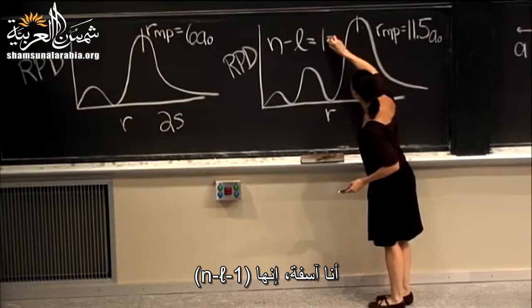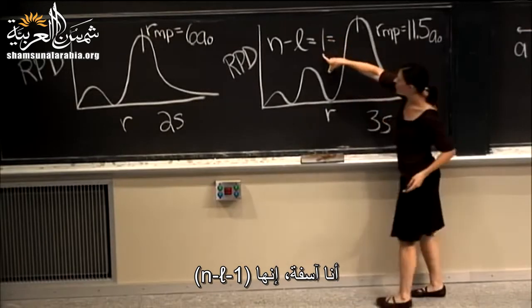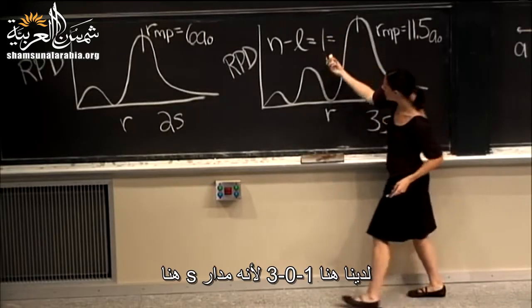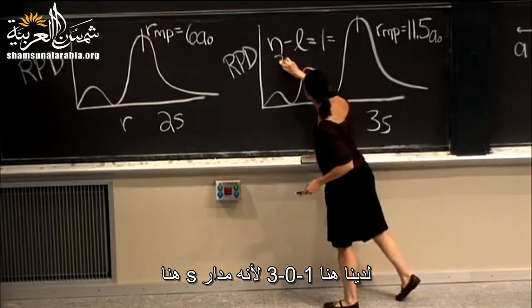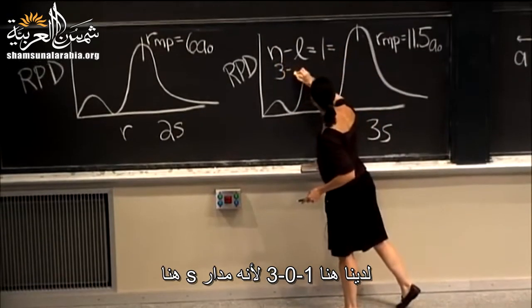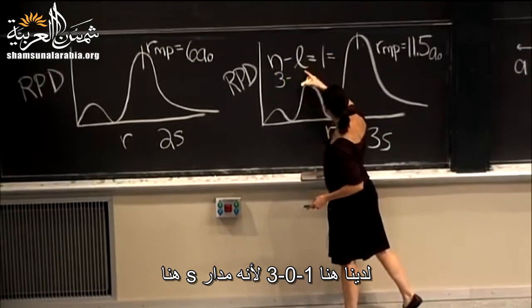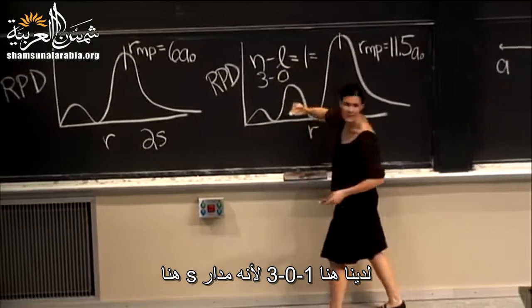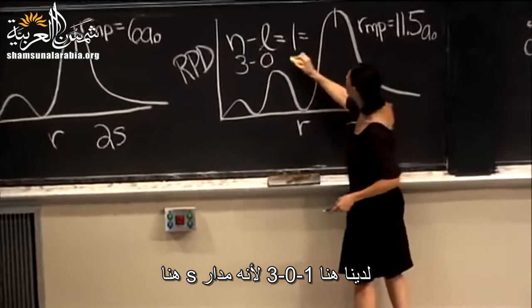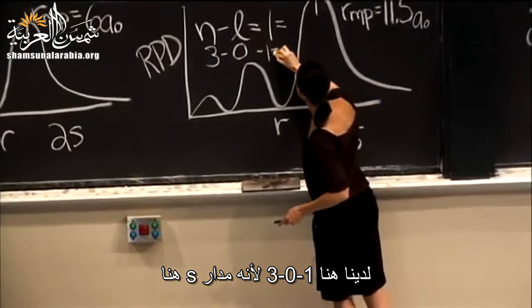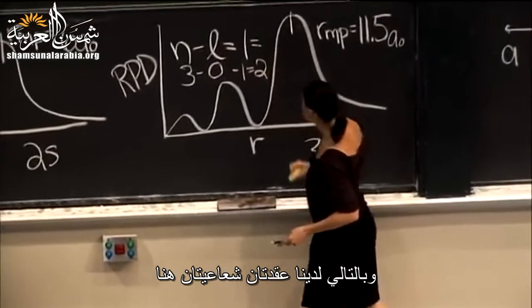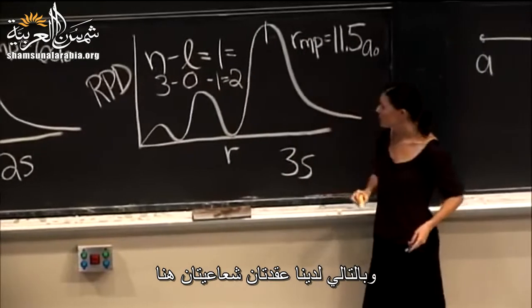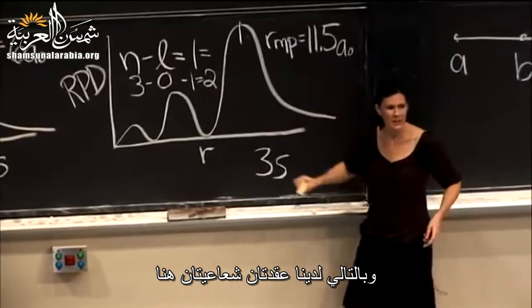For the 3s orbital using n minus l minus 1: we have 3 minus l equals 0 (since it's an s orbital) minus 1, giving us two radial nodes.